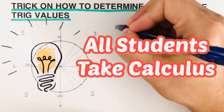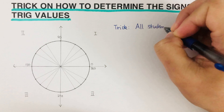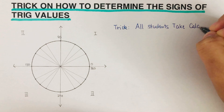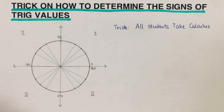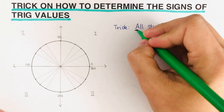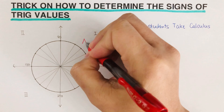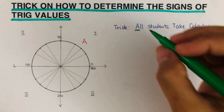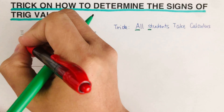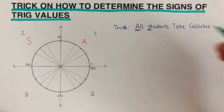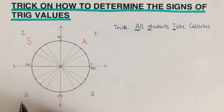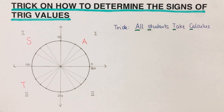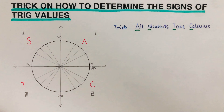The magic statement is: All Students Take Calculus. The letter A is on the first quadrant, S for Students is on the second quadrant, T for Take is on the third quadrant, and C for Calculus is on the fourth quadrant.